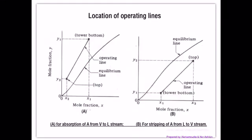The location of the operating line depends on the types of absorption column that we have. So if we were to have absorption column, we're going to have operating line here before we can see the equilibrium line.